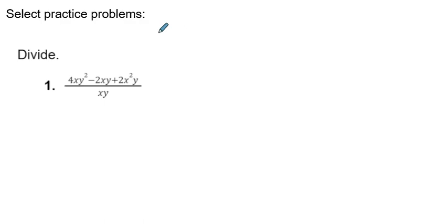All right, so those two problems. Okay, so very similar to the lesson and what we're going to be doing. All right, so this first one, we've got 4xy² minus 2xy plus 2x²y all over xy, all divided by xy.